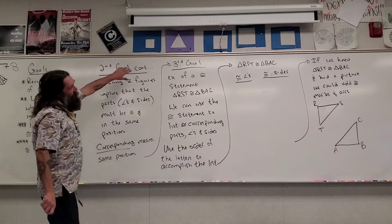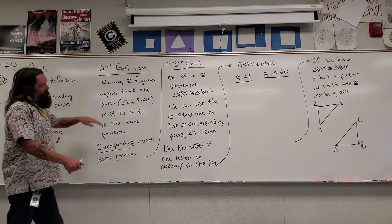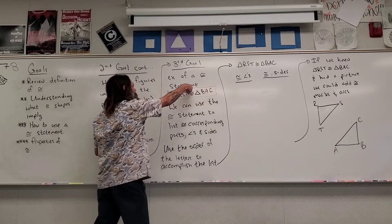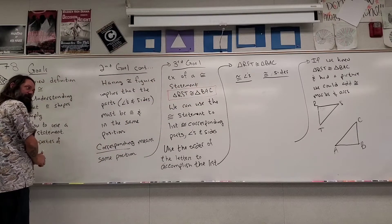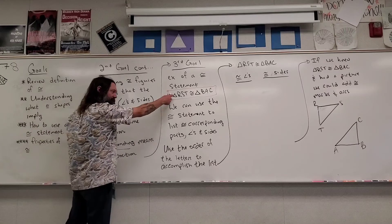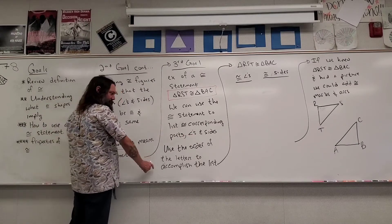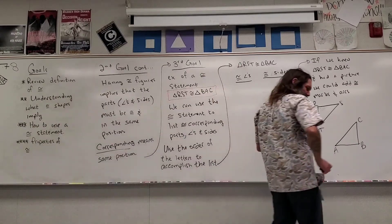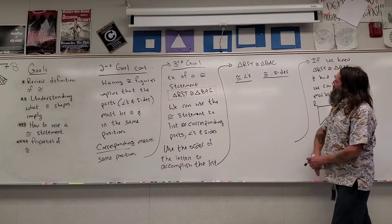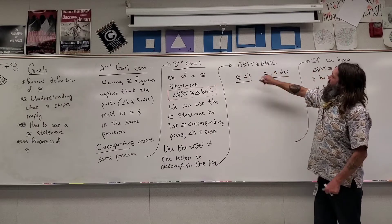We're going to see how to use a congruent statement. A congruent statement lets us list corresponding parts — remember, corresponding is a fancy way to say parts that are in the same position. We use the order of the letters to accomplish the list. Letters by themselves represent angles, and two letters at a time represent a side. So from the congruent statement, I know that angle R must be congruent to angle B, and angle S must be congruent to angle A.